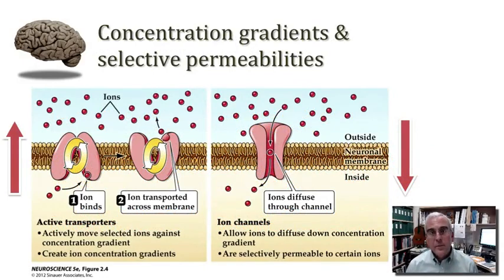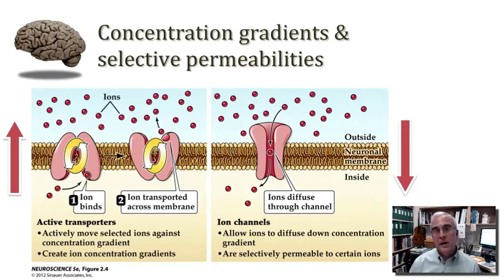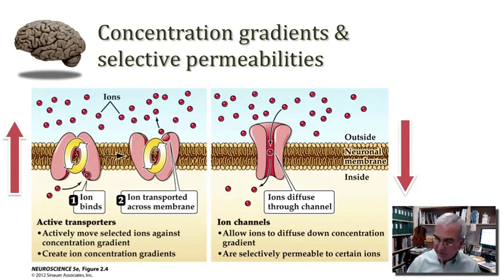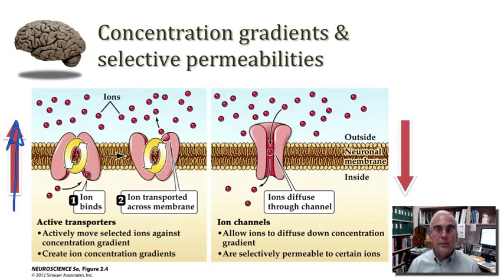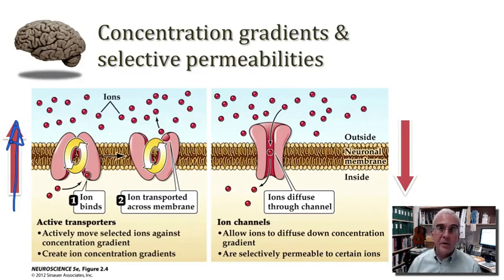Let's consider two important mechanisms that support all manner of electrical signaling in nerve cells. These mechanisms are supported by two very different kinds of proteins found in the membranes of neurons. One type is an ion pump or ion transporter, illustrated on the left-hand side of the slide. What these pumps and transporters do is translocate ions from a region of low concentration to a region of high concentration — an active mechanism pumping ions against a concentration gradient, requiring the consumption of energy. This is an example of active transport.